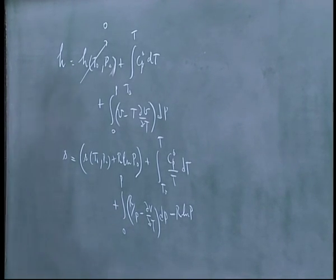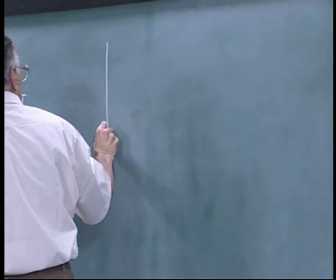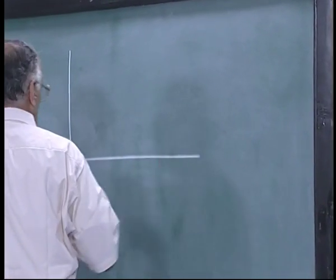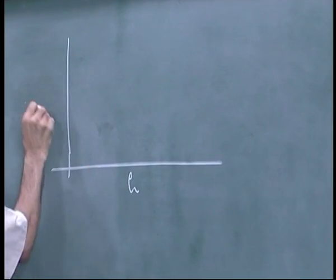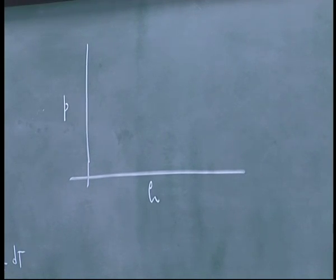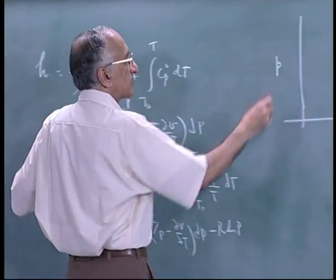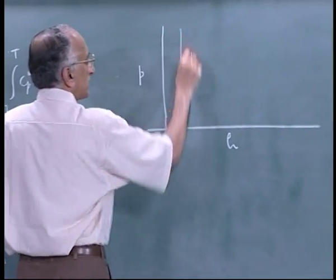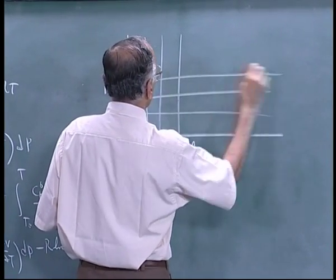So these are the two expressions that we use and we started drawing the chart. If you plot enthalpy here, it is usually one intensive variable on the Y axis. Clearly the isenthalpic lines are simply vertical lines and the isobaric lines are like this.